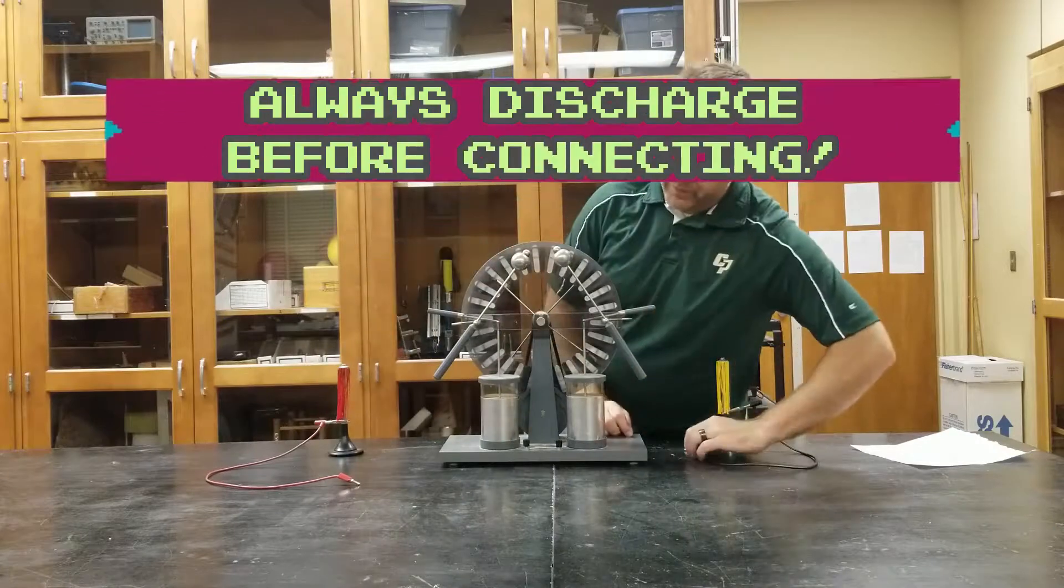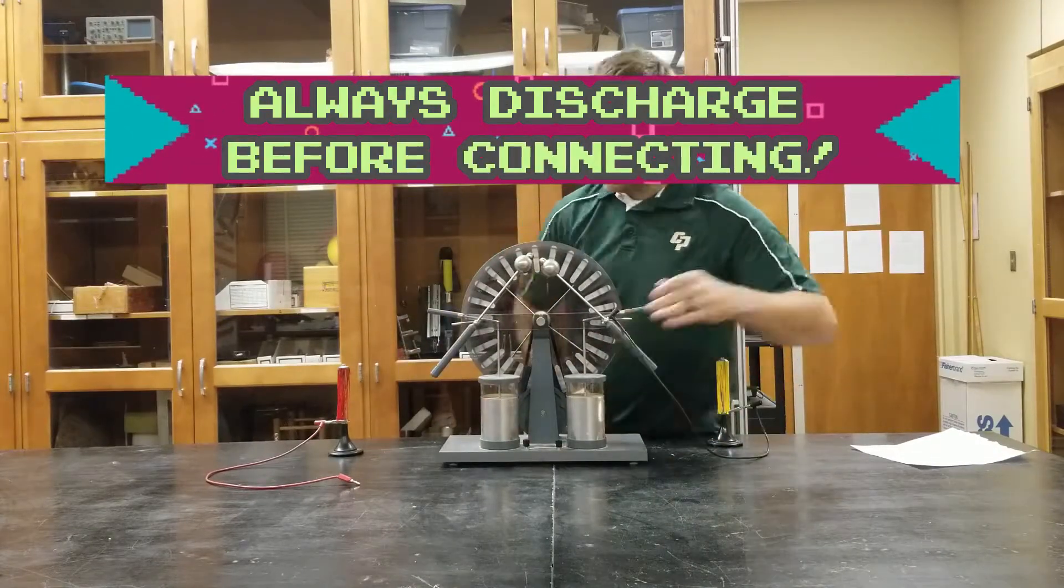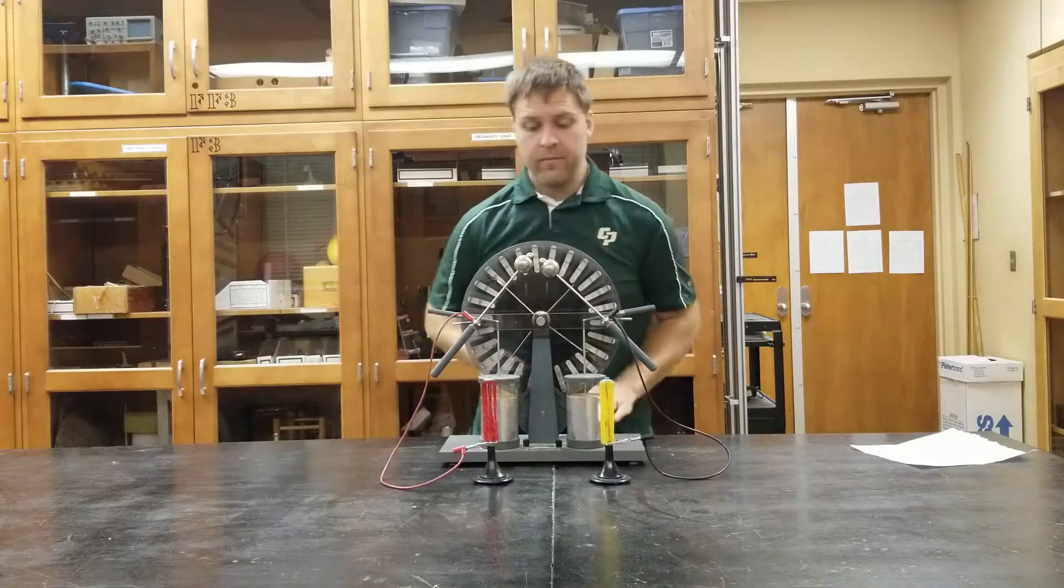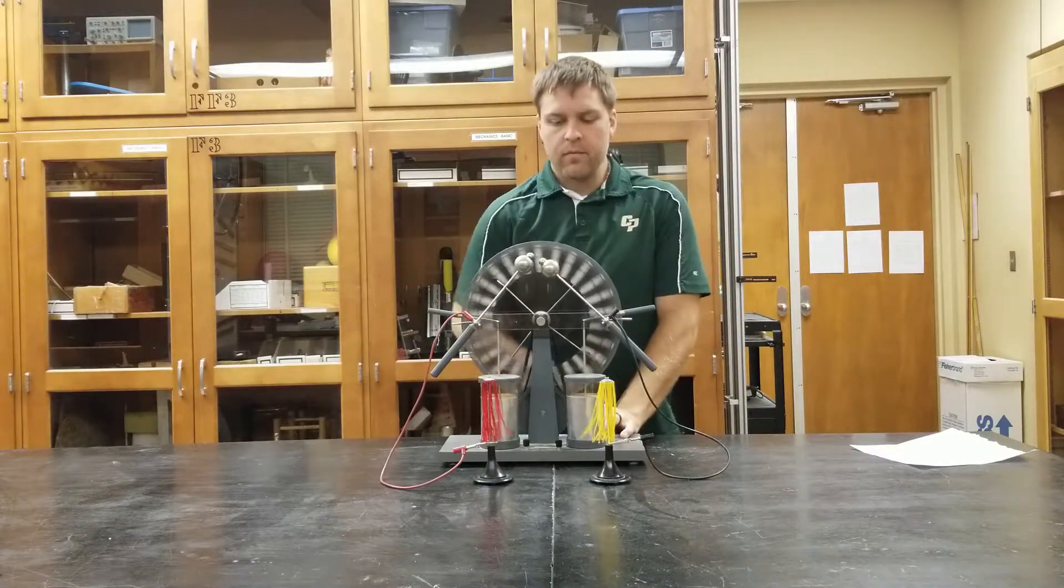After this is done, you can also use the Wimshurst machine to demonstrate the electric field lines of two oppositely charged and similarly charged particles using the pom-poms.